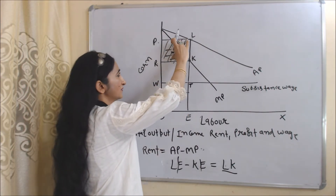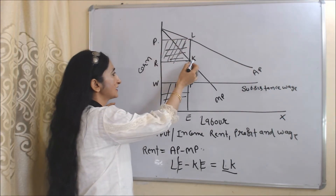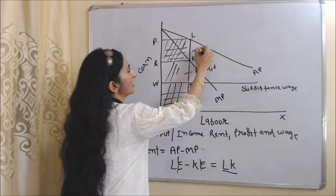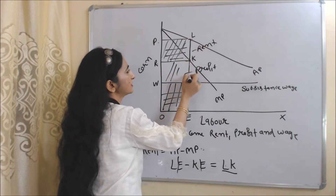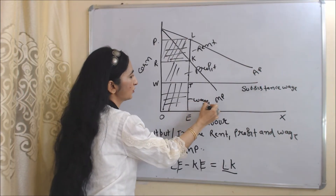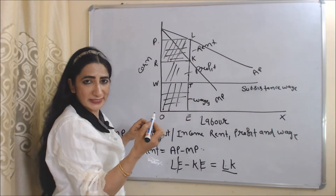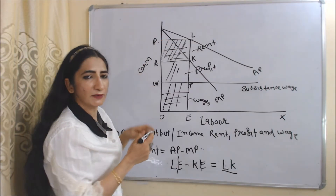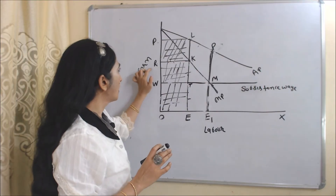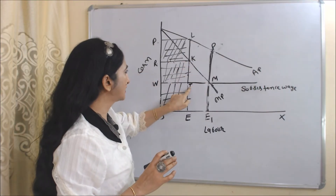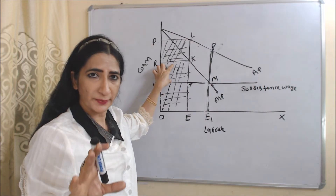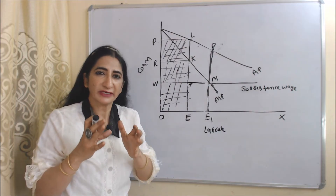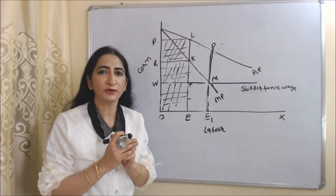The area O, W, T, E represents total wages, R, P, L, K represents total rent, and the remaining area R, K, W, T represents profit. So we distribute total income between rent, profit, and wages. Profit is very essential for economic growth because capital accumulation depends on profit.